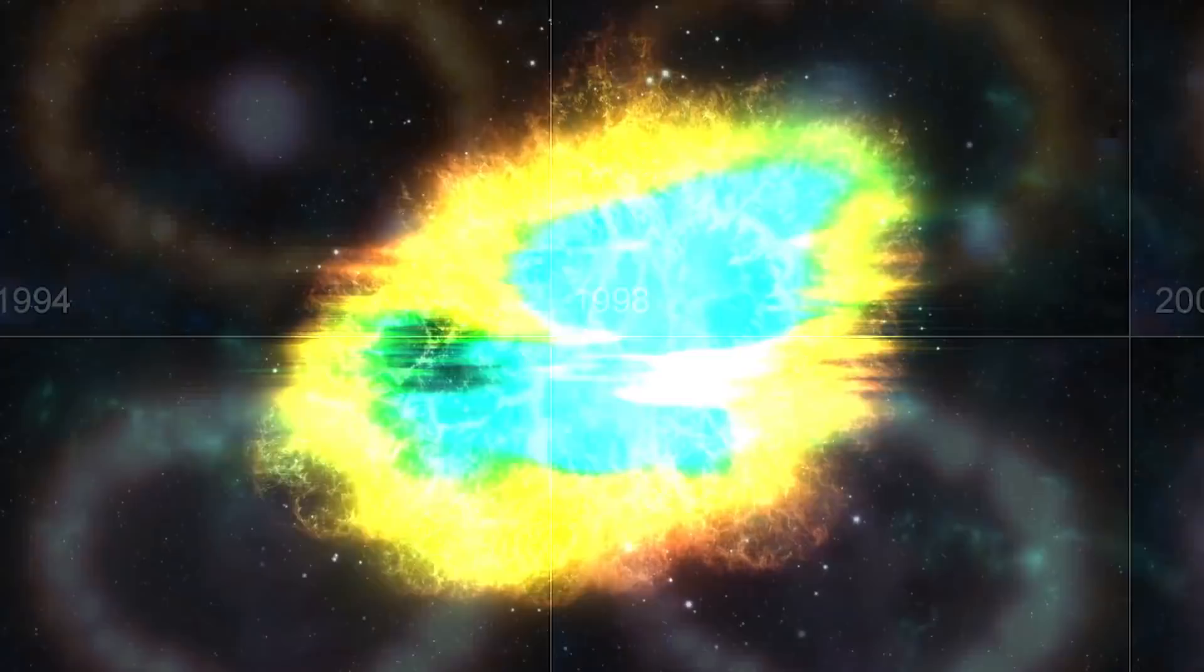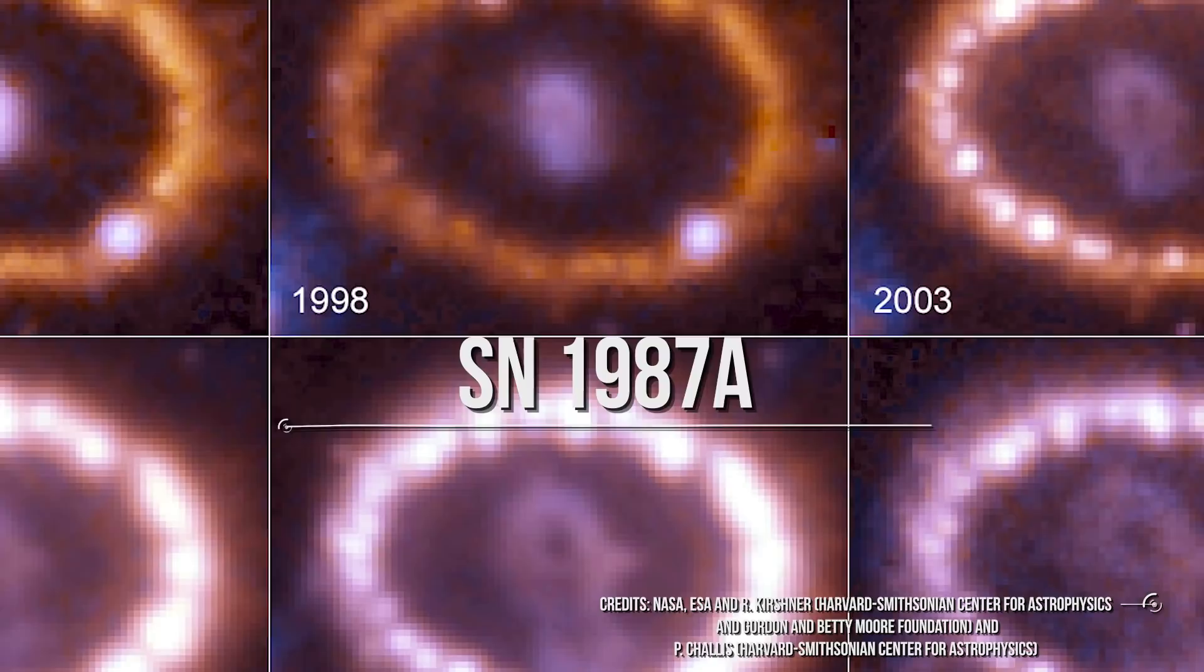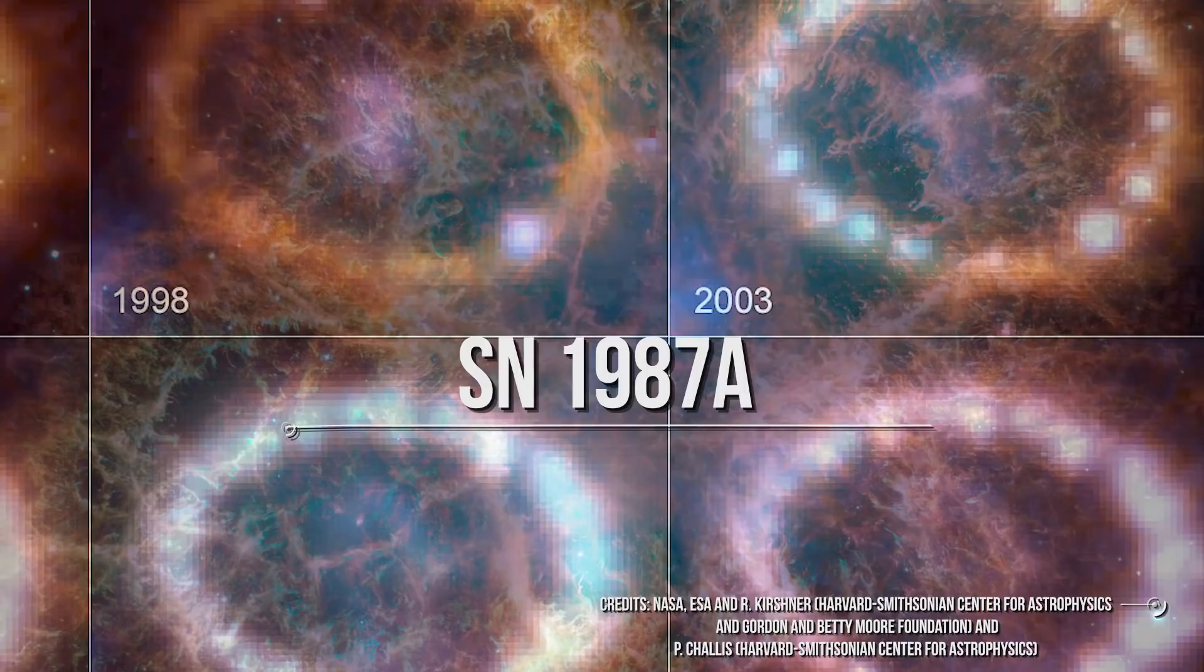One of the best observed young supernova remnants was formed by SN 1987A, a supernova in the Large Magellanic Cloud that was observed in February of 1987. Another one is the so-called Crab Nebula. Aren't they beautiful?